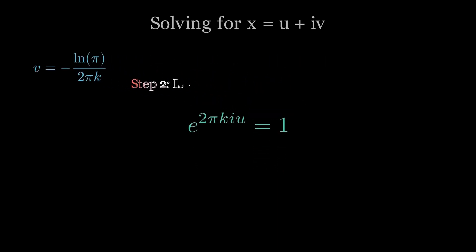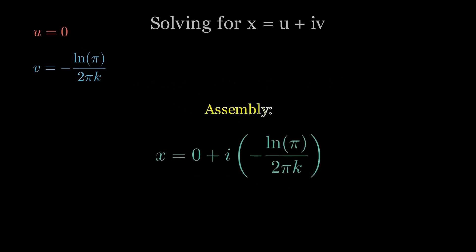Now the direction. We want e to the 2πkiu to land exactly back at 1. The simplest choice is to match the exponent to 0, which gives u equals 0. More generally, u can be any integer over k, but we'll keep the simplest branch.